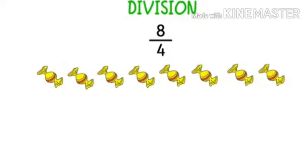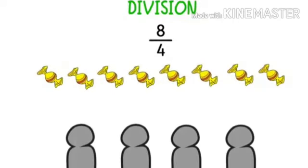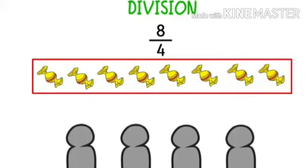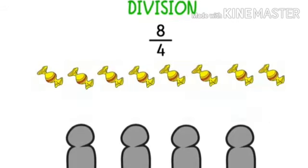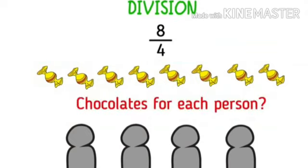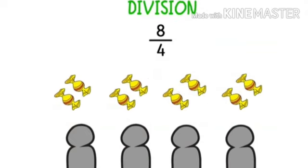Imagine this scenario. There are 8 chocolates and 4 people. And we want to distribute these 8 chocolates to 4 people such that everyone gets equal number of chocolates. How many chocolates will a single person get? Each person will get 2 chocolates.